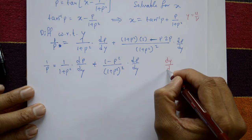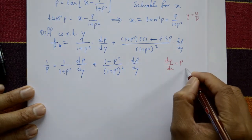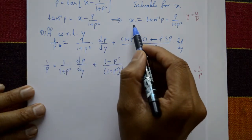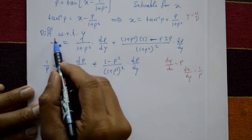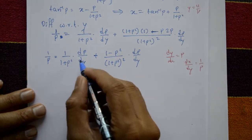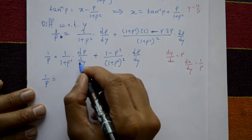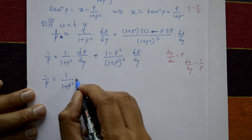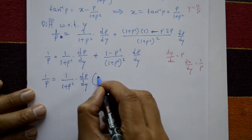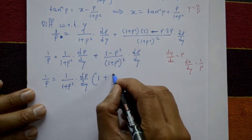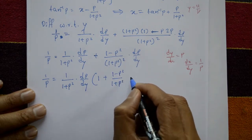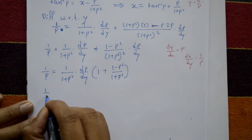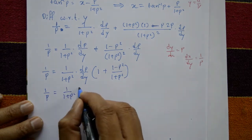Since dy/dx = p, then dx/dy = 1/p. So 1/p = 1/(1 + p²) · dp/dy + (1 - p²)/(1 + p²)² · dp/dy. Taking 1/(1 + p²) as common factor: 1/p = [1/(1 + p²)] · dp/dy · [1 + (1 - p²)/(1 + p²)].